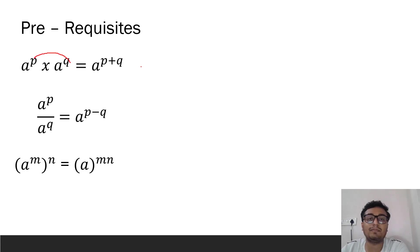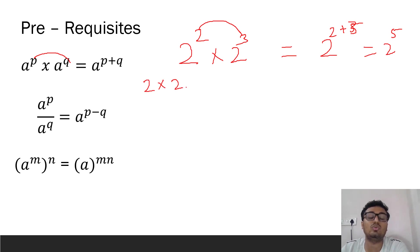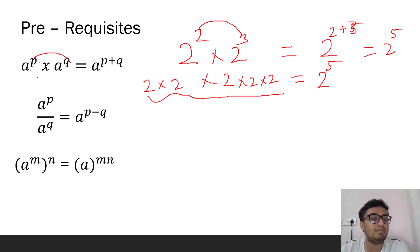The first rule: when we multiply a raised to p by a raised to q, we add the powers. For example, two squared times two cubed — you keep the base as it is and add the powers: 2+3 = 2 raised to 5. This works because two squared means two is multiplied two times, and two cubed means two is multiplied three times, so together two is multiplied five times.